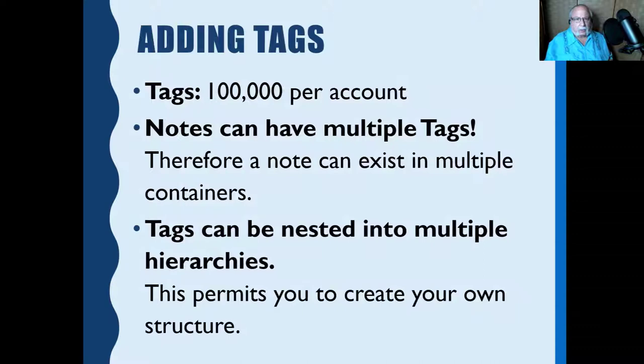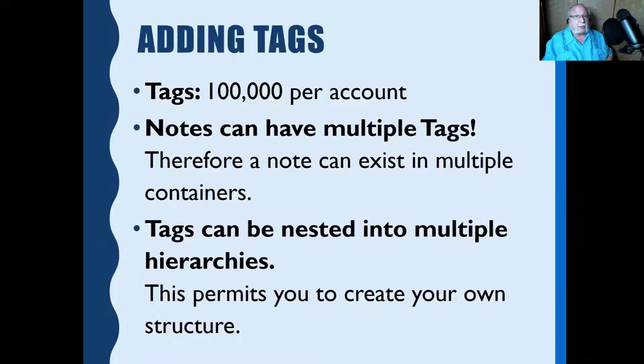You can add tags to any note — there are up to 100,000 tags per account allowed. I personally don't use tags because the search is so good I don't need them, and it takes time to add them each time with a lot of notes. But if you're comfortable with tags, you can put various tags on different articles and search by a particular tag. A note can have multiple tags and exist in multiple containers, and tags can be nested into multiple hierarchies, permitting you to create your own structure.